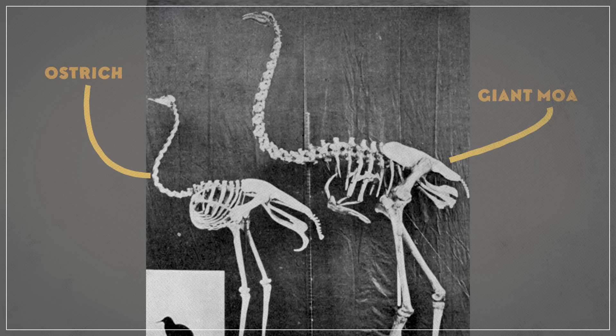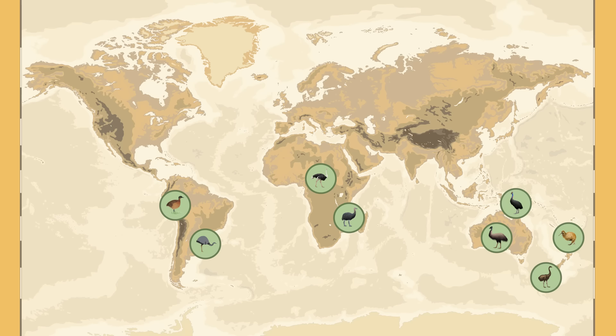And this idea held together pretty well for a very long time. After all, the bones of modern and extinct ratites all look remarkably similar, and seem to support the idea of a common flightless ancestor. But in the late 2000s, new research into ancient DNA blew this theory into pieces.